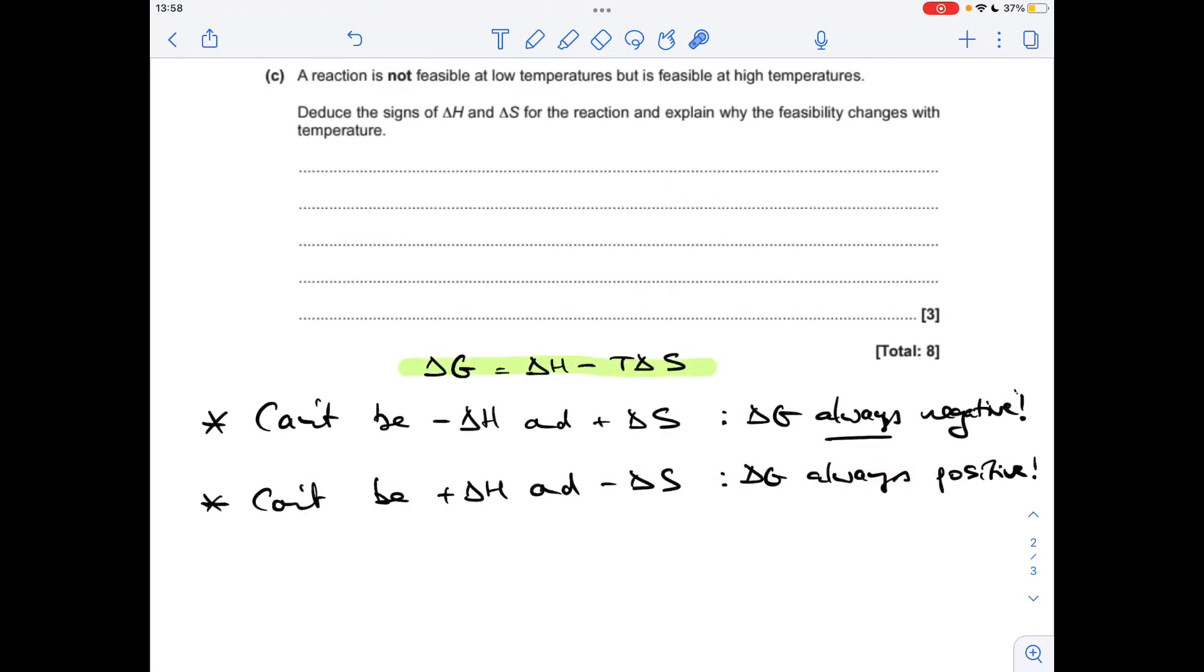And finally, part C. I think this is quite tricky. I don't know what you thought about it, but hopefully you'll get my explanation. So obviously, it's all centered around the Gibbs equation and the relative or the effect of T on the delta G value as it changes.